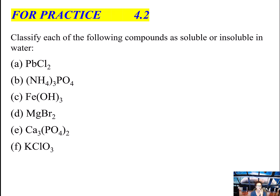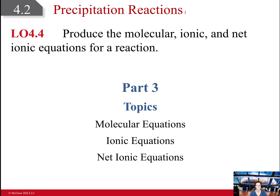Here are some practice compounds — go back and look at your table and see if they're going to be soluble or insoluble. It's important that we can identify these, because when we put things together in reactions, we've got to figure out which product is insoluble. Now that we know how to predict solubility, in the next part we'll figure out how to write molecular equations, ionic equations, and the net ionic equation, which tells us what reaction actually occurred and whether precipitation happened.